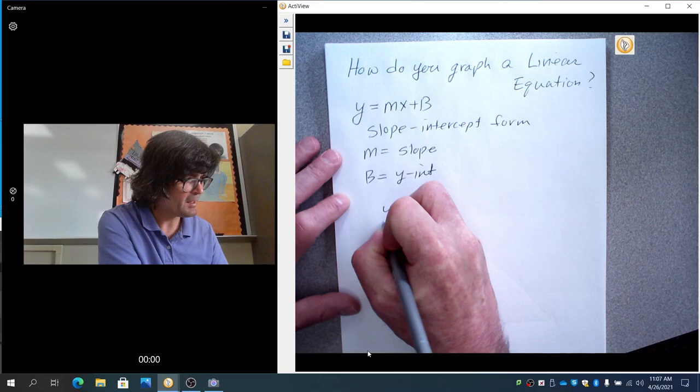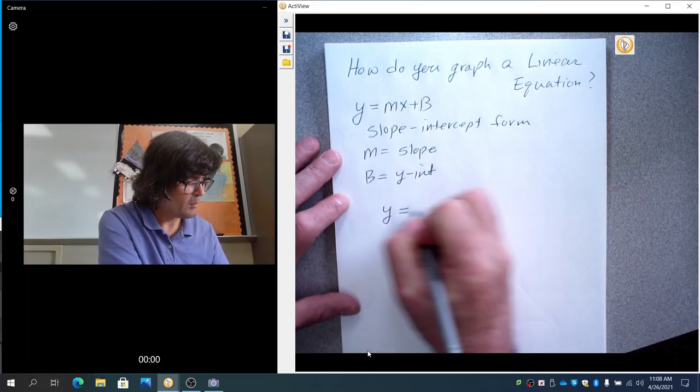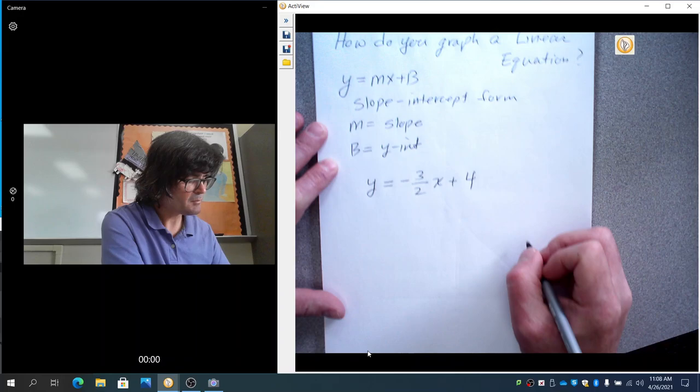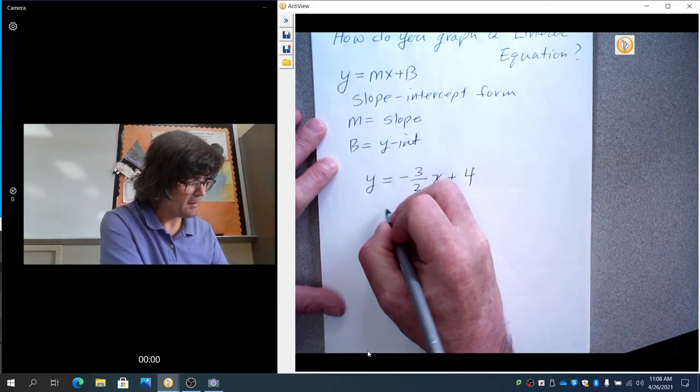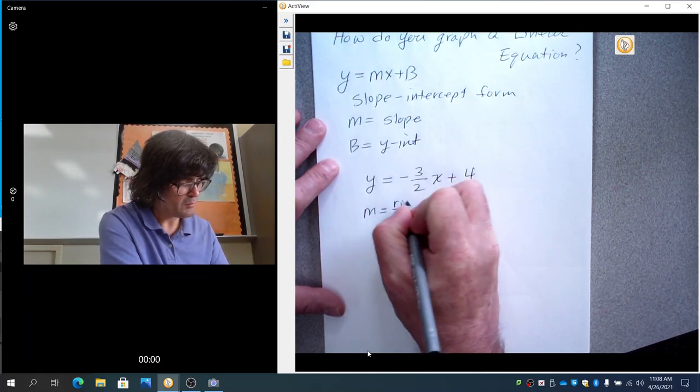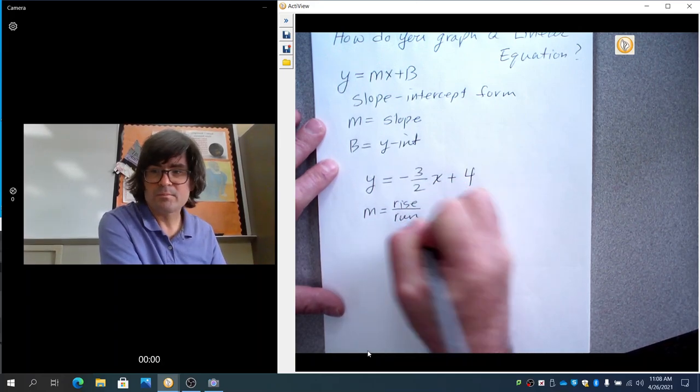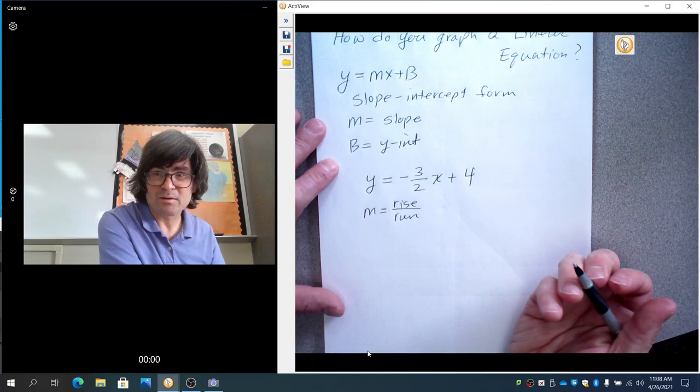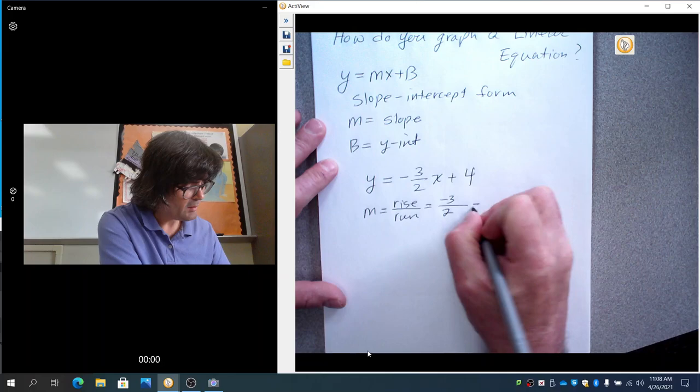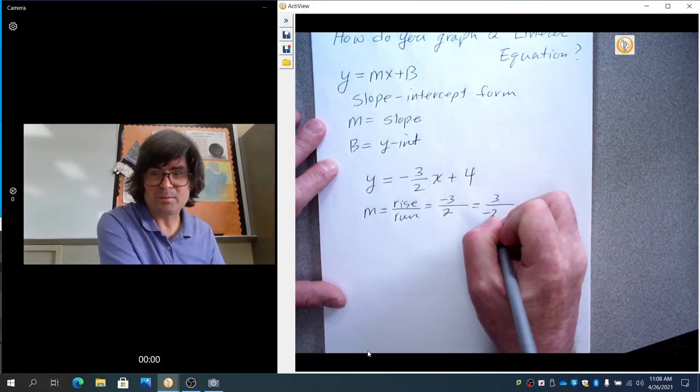For starters, let's just try an example. Y equals negative 3 halves x plus 4. My slope is also, think of that as rise over run. It's rise over run. How much you go up and down over how much you go left and right. That is going to be negative 3 over 2. It also could be 3 over negative 2. It makes no difference.